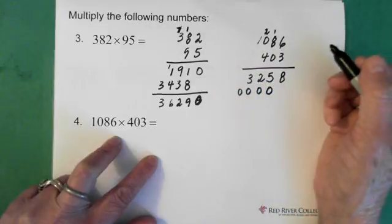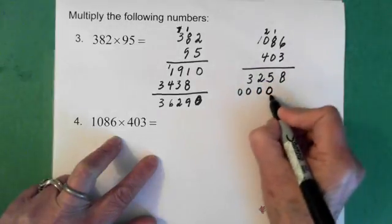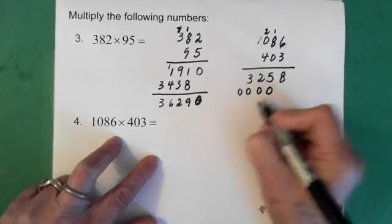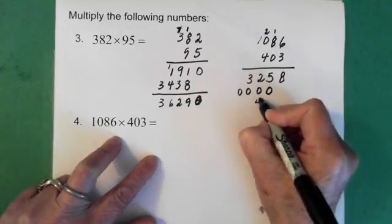Now, 4 times 6 is 24. Now the 4, again, we keep moving over. So we moved over 1 here. And we moved over 1 here. So the 4 goes here.